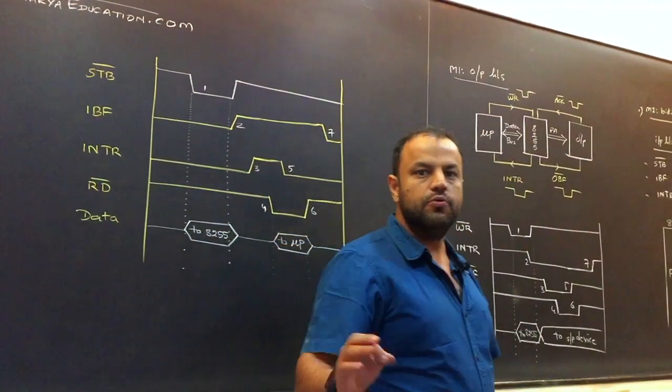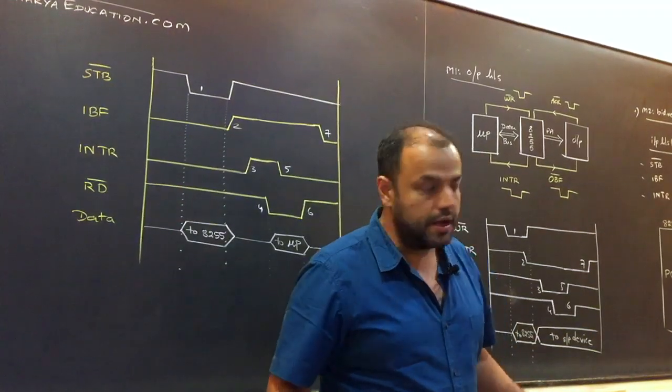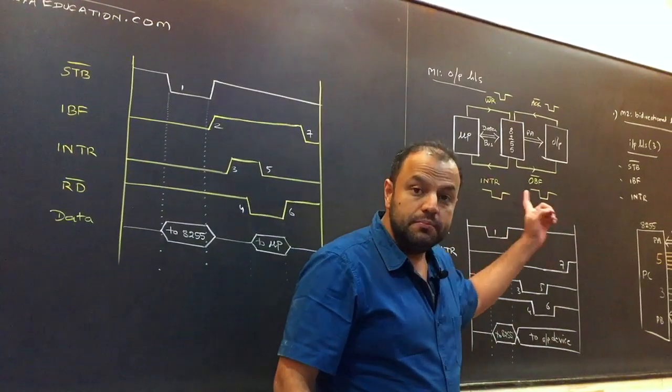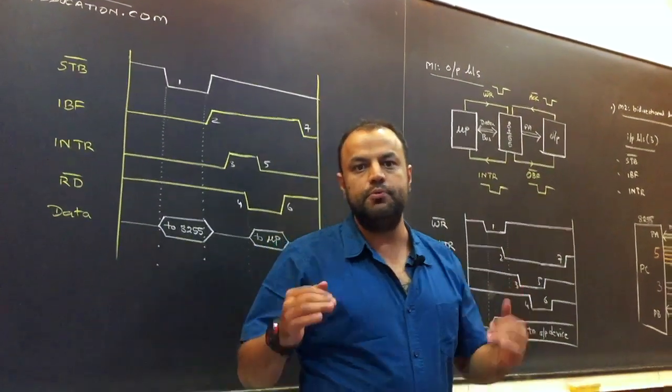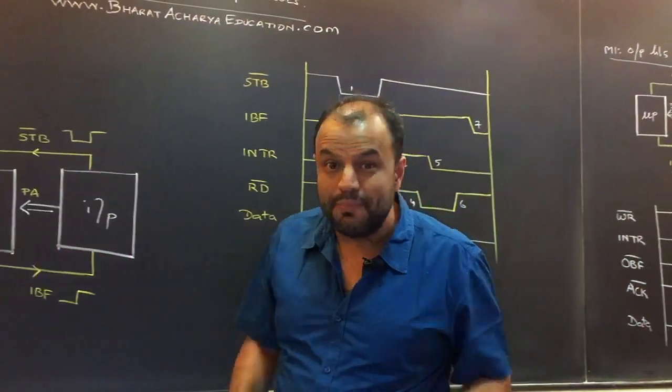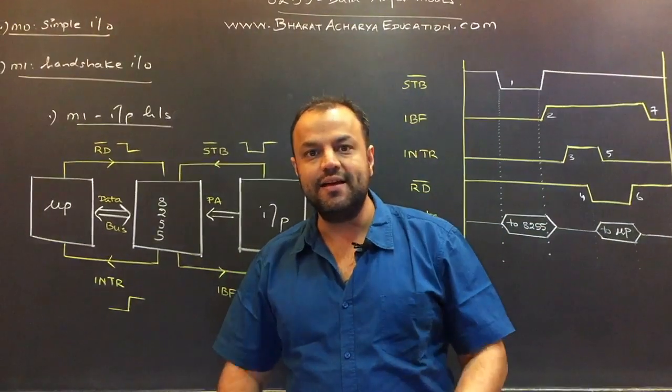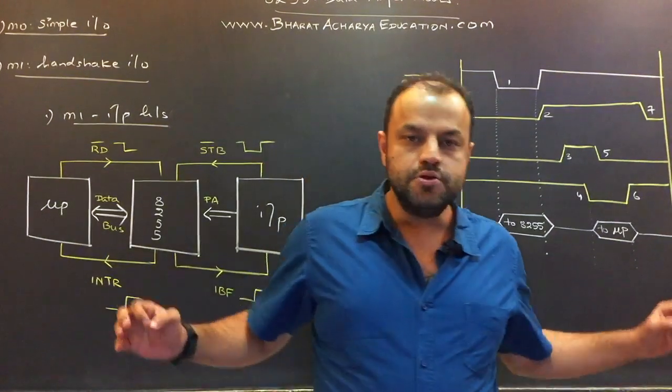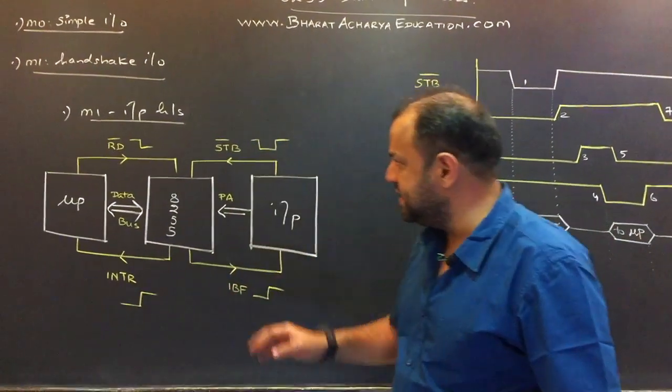Similarly, if a port is in mode 2, lifelong it's going to work only for output devices if a port is in mode 1 output. But if your port is in mode 2, it can work for both input devices as well as output devices. It can do handshaking for both, but the method of doing handshaking is exactly the same as the way you do it in mode 1.